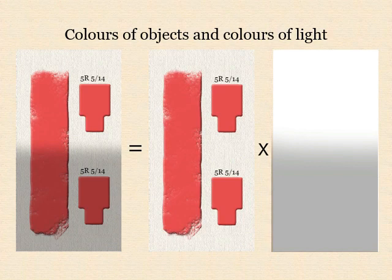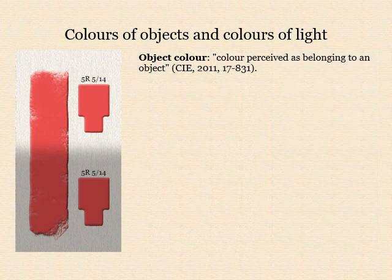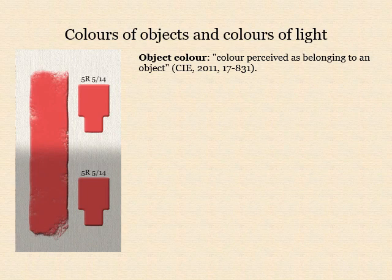We needn't explore here the controversial question of how our visual system generates these perceptions. For this talk, we only need to observe that they arise more or less instantly, automatically, and without conscious thought or effort. It's only because we see the visual field resolved in this way that we see objects as having an intrinsic hue, lightness, and chroma, and not just constantly shifting hue, brightness, and colourfulness.